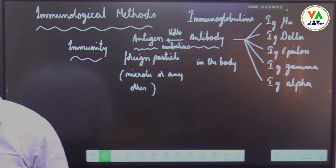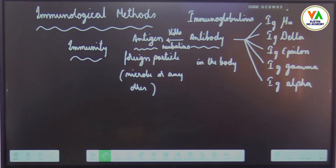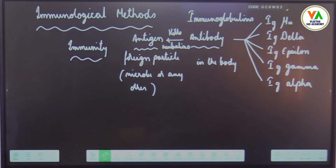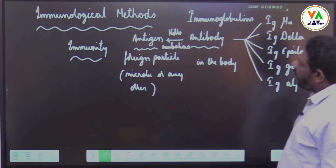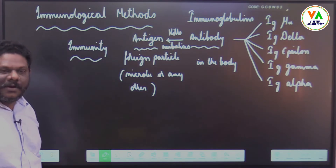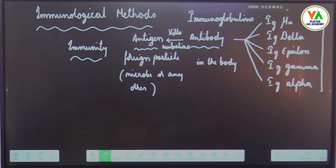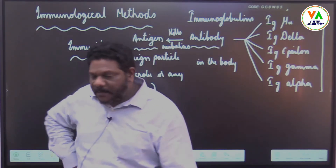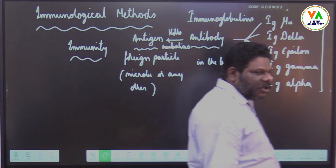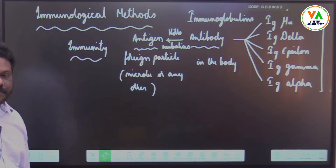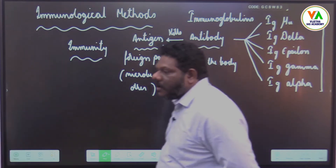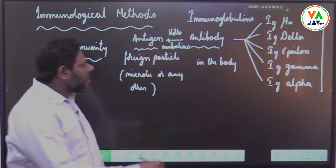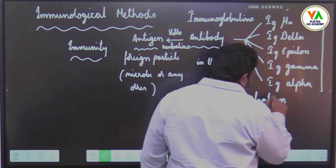Please write: immunity is nothing but the body's response towards an antigen. Antigen is any foreign particle or any microorganism in the body. Antibodies produced by the body kill or neutralize the antigen. Antibodies are also known as immunoglobulins: immunoglobulin mu, delta, epsilon, gamma, and alpha. Immunological methods are techniques used to identify the presence of antigen, antibody, or any other protein in a biological specimen.